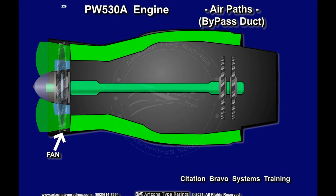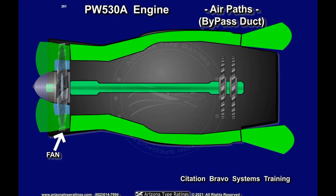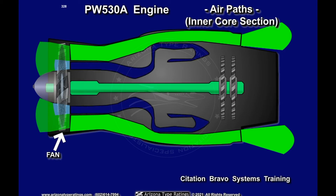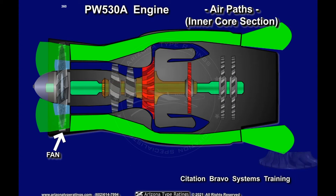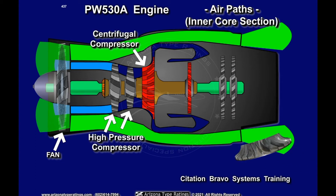This cool air flow produces the majority of the engine's thrust at lower altitudes where the air is dense, therefore heavy. The inner core air is fed from the fan through the inner duct, and then flows into the high-pressure compressor assembly. This assembly consists of two stages of axial compression and a single-stage centrifugal compressor.